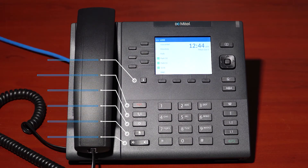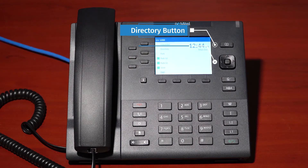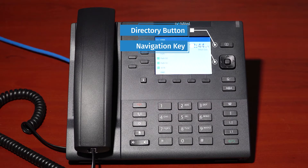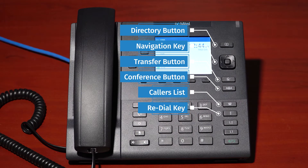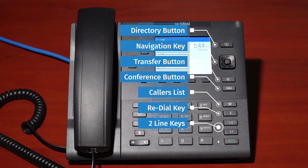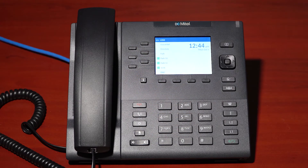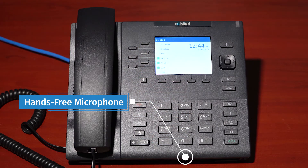Moving to the upper right, we have the directory button, the navigation key for navigating through the phone's user interface with its center button that functions as a select key, the transfer button, the conference button, the caller's list — which is a stored log of incoming calls containing up to 200 entries — the redial key, which stores up to 100 of your last dialed numbers, two hard-set line keys with LEDs that highlight to indicate usage, and the speaker headset key, which enables easy toggling between speaker and headset.